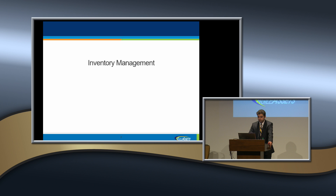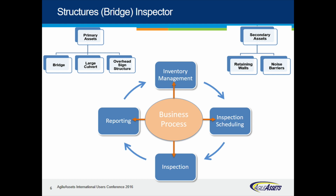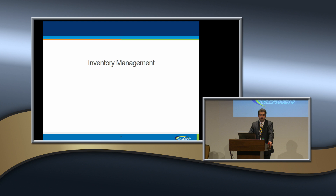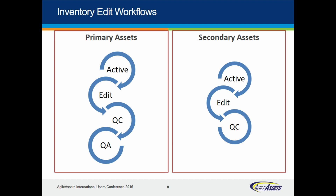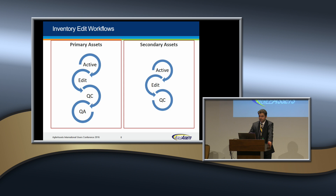Inventory management is the place where we collect inventory data, and it can be different for each structure. For primary assets, we have active, edit, QC, and QA stages. For secondary assets, we have active, edit, and QC. So we have one level of review for secondary assets but two levels of review for primary assets.